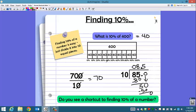So take a look at your answers and compare them to the whole. Do you see a shortcut for finding 10% of a number? Let's see. We went from 400 to 40. What happened to our number? It got smaller by a place value, right? What about 700 to 70? The same thing. We lost a place value.